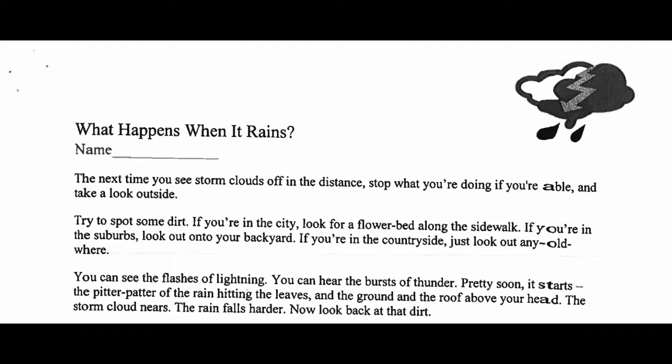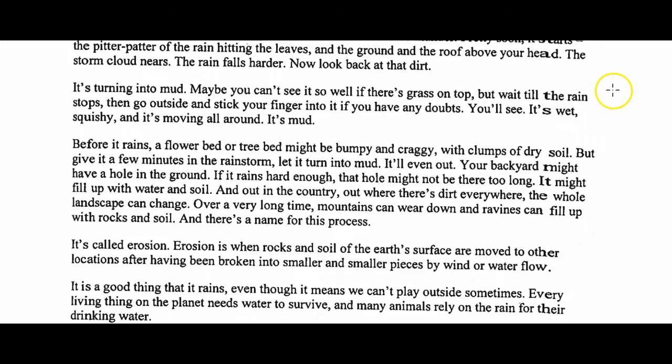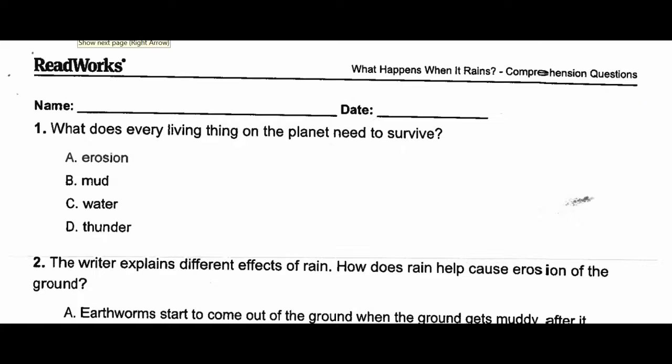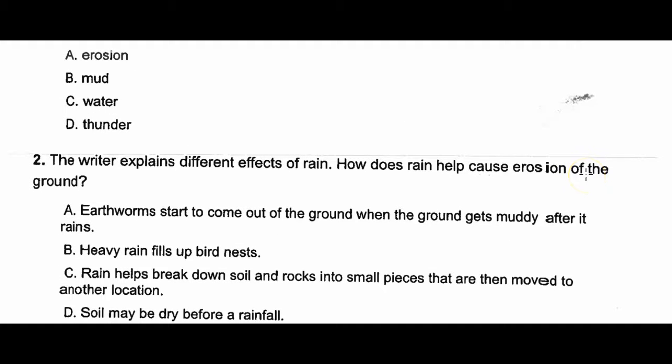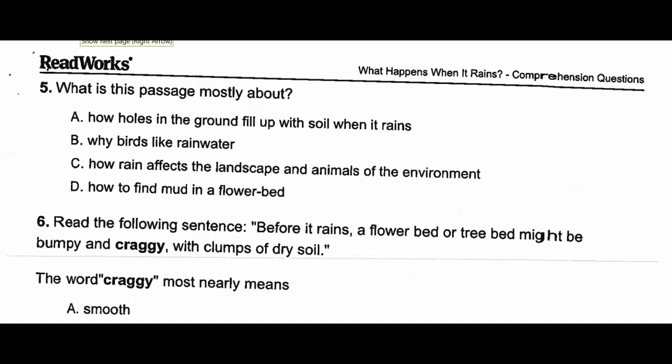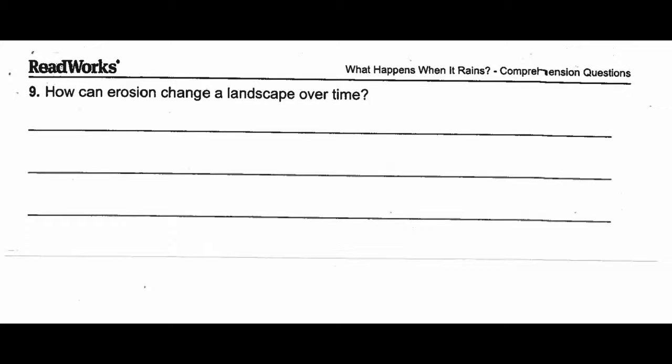And then for your reading, just read the text about what happens when it rains, and then answer the questions. And answer the questions there. There's nine total. And then, answer this question with support from the text. How can erosion change the landscape over time?